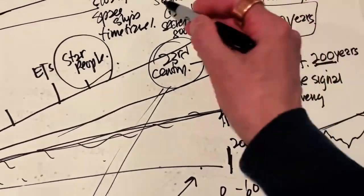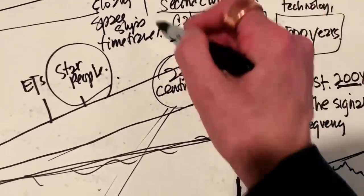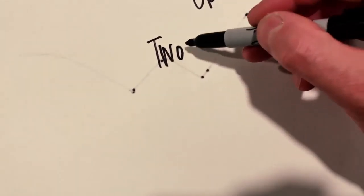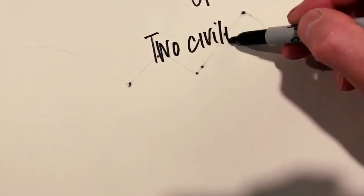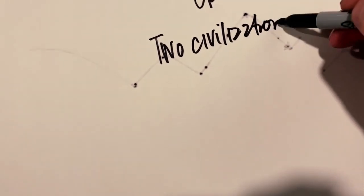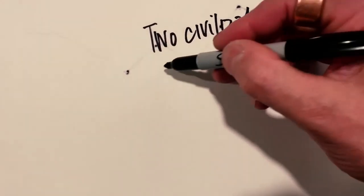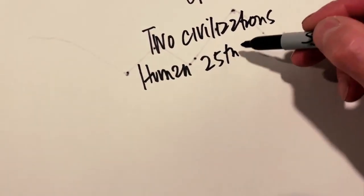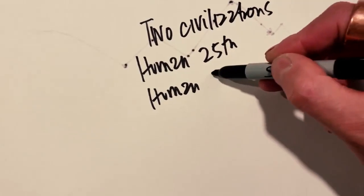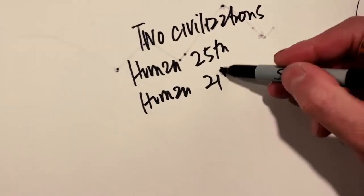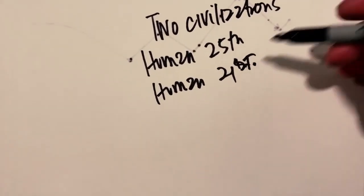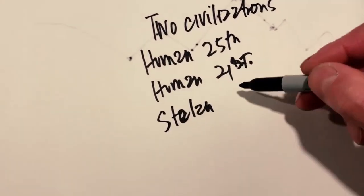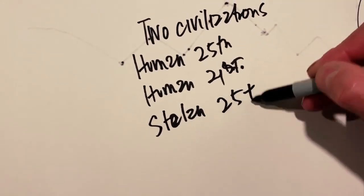But now our civilization is split. So we have at least two civilizations. Well, we have more. We have the two civilizations of human. You got the human 25th century and the human 21st. And then you got the Stellan, which are 25th plus.